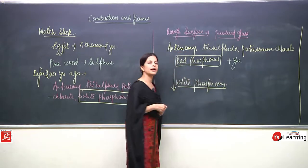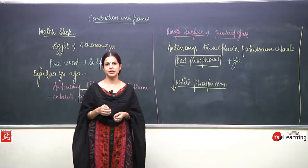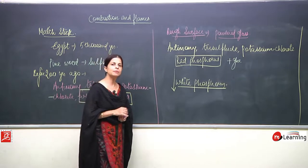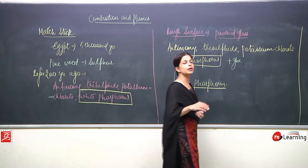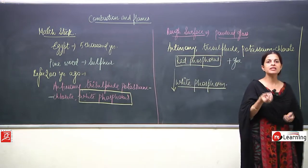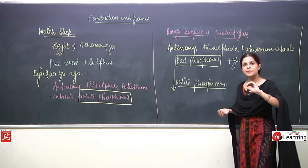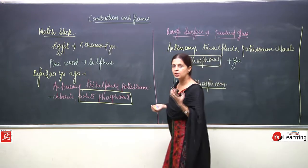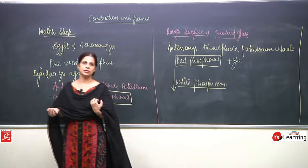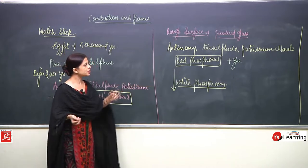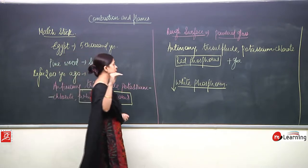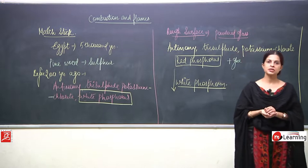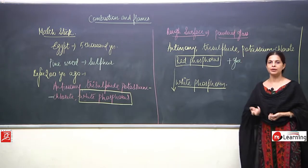As we all know, white phosphorus catches fire — it reaches its ignition temperature. Ignition temperature is that minimum temperature — the least temperature at which a substance catches fire, which is required for a substance to burn, required for a substance to undergo combustion. So it reaches the ignition temperature and thus catches fire, and thus we see the matchstick burning.